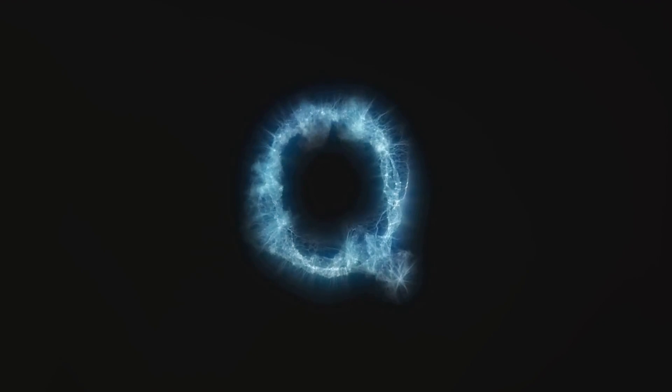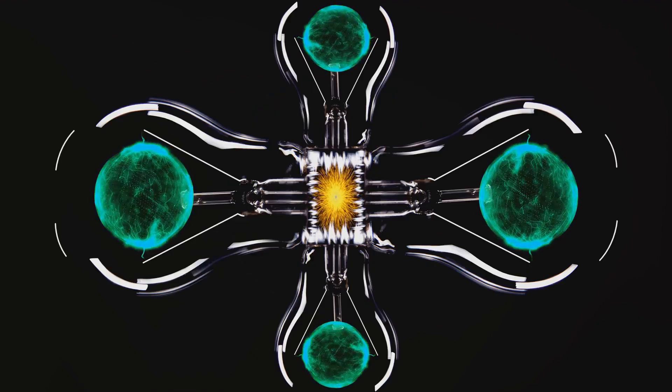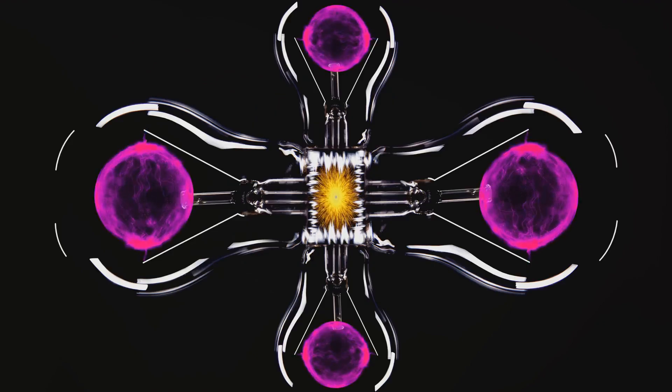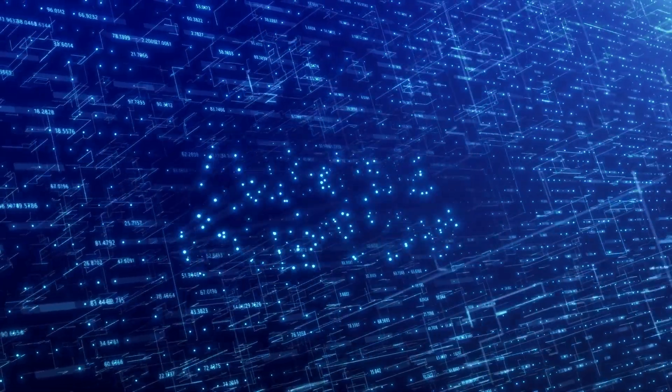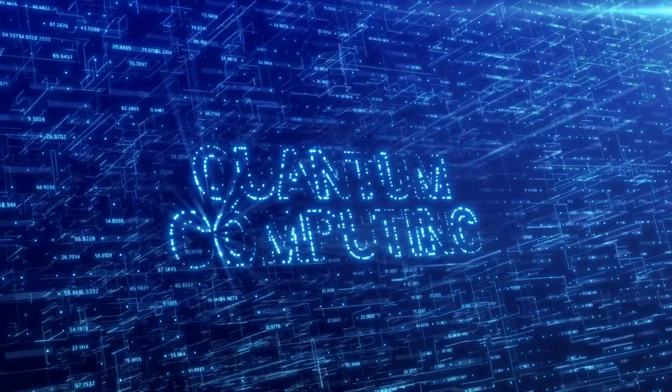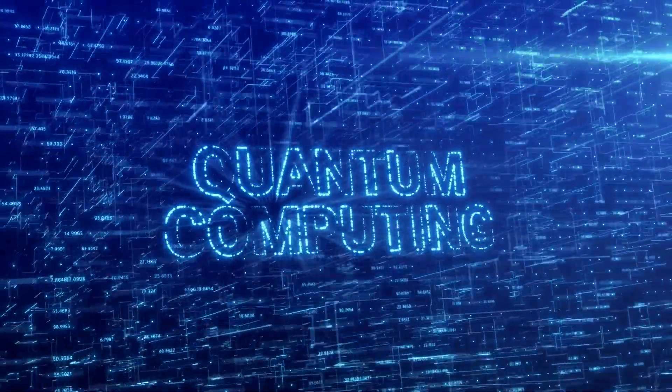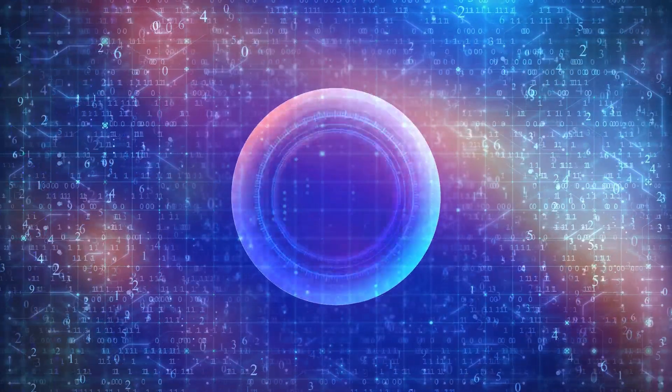Now these fermions are quite the individualists. They usually prefer to maintain their distinct states. But under extreme conditions like ultra-low temperatures, they start to act out of character. They begin to overlap, lose their individuality, and start behaving like one big super particle. This is not something you'd see in your everyday states of matter like solids, liquids, gases, or even plasma.